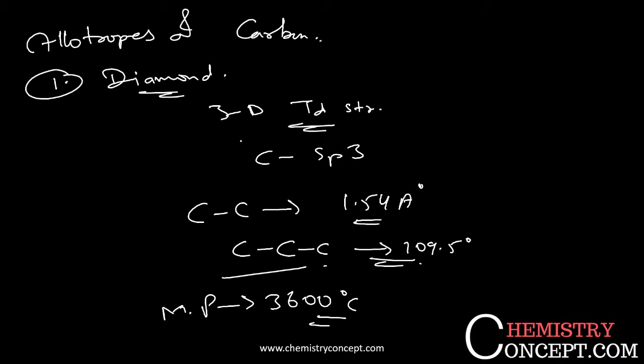Diamond has a very high refractive index of 2.5. Due to unavailability of mobile electrons, it is not a conductor of electricity. Now let's move to graphite.